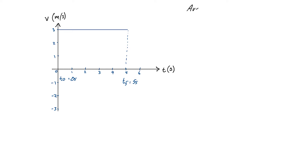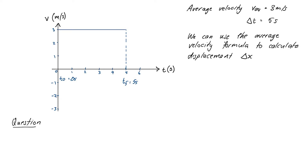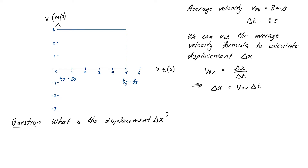In this case our average velocity is also just three meters per second because velocity doesn't change. To find displacement we use the average velocity formula: v average equals delta x over delta t. Rearranging, displacement equals v average times delta t, which is three times five, giving 15 meters. Now, can you see what significance this number has when looking at the graph? Think about properties of shapes — what kind of thing are we calculating when we multiply those two numbers?